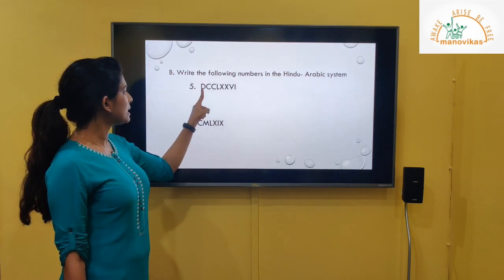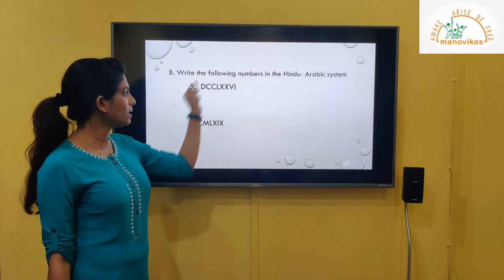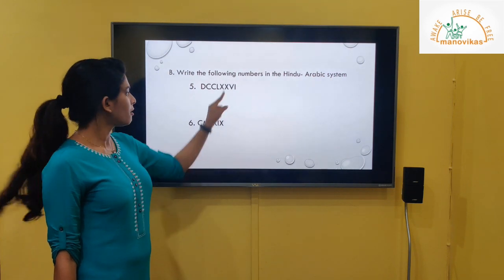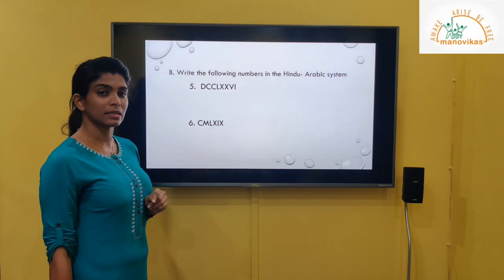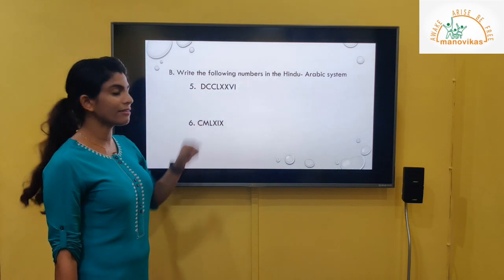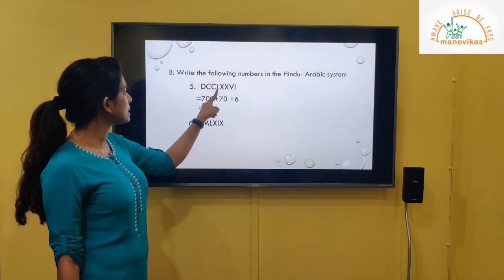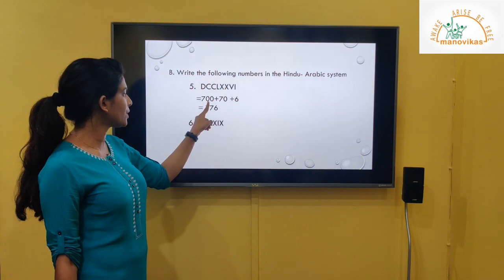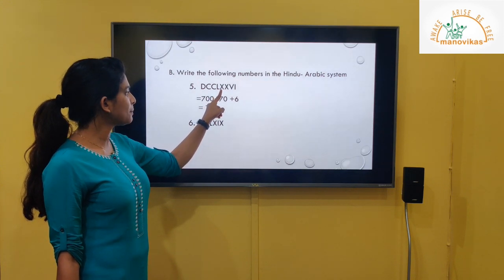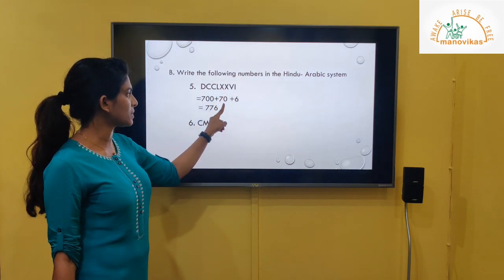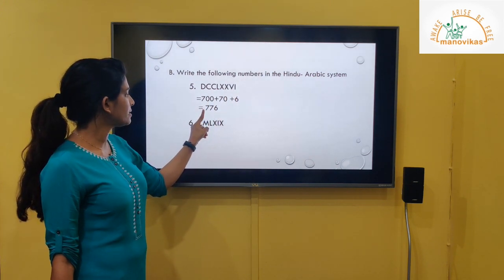Fifth: DCCLXXVI. Expand: VI comes in the ones place, LXX in the tens place, DCC in the hundreds place. DCC equals 700. LXX: L is 50 plus 10 plus 10 gives 70. Wait — 50 plus 10 plus 10 gives 70, and VI is 6. After adding we get 776.